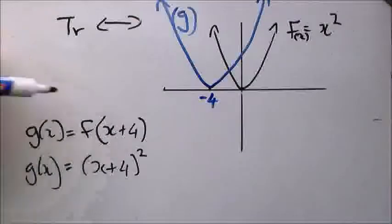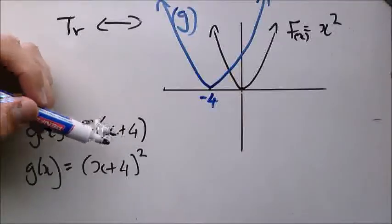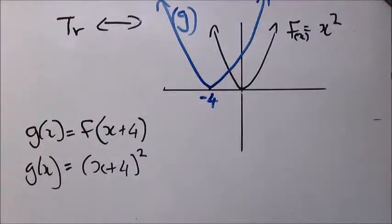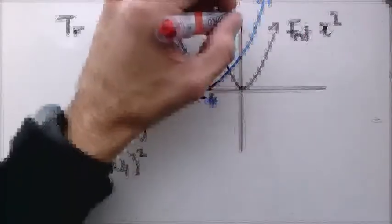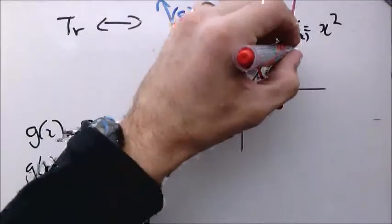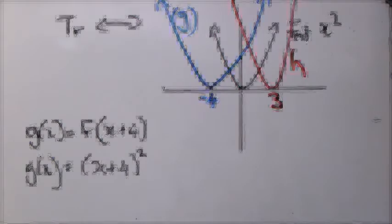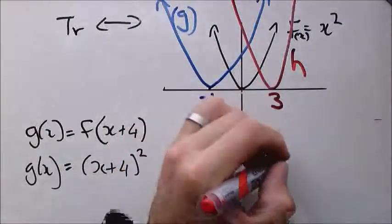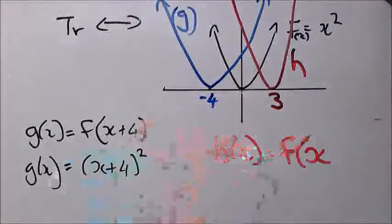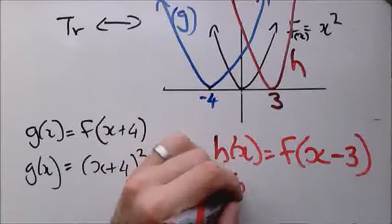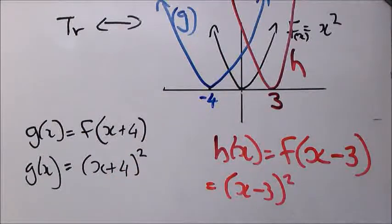To repeat: with horizontal translation, you add or subtract from x, not the whole function. Another example — the red graph is at x = 3, and we call it h. Then h(x) = f(x-3), which is (x-3)². Keep that in mind.